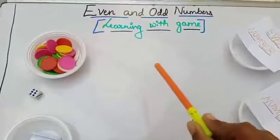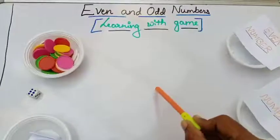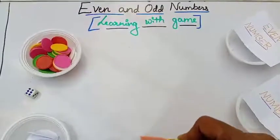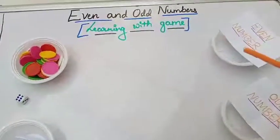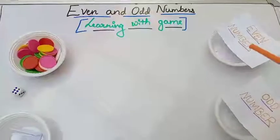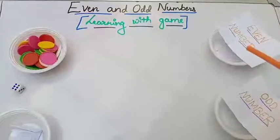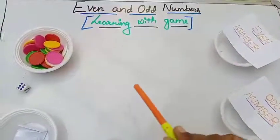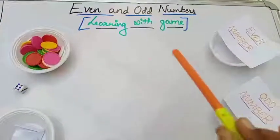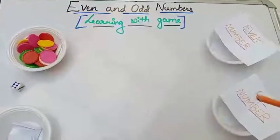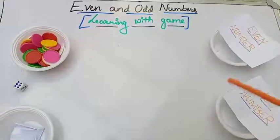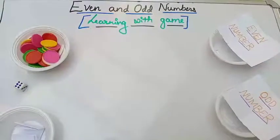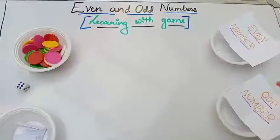Six is an even number. That means the six coins will go to the even number bowl. If the dice shows an odd number, those coins will go to the odd number bowl.